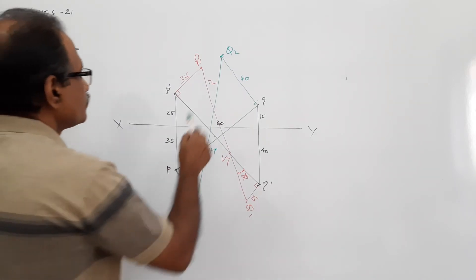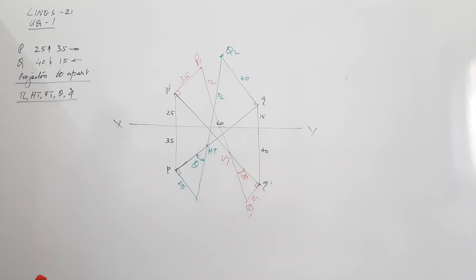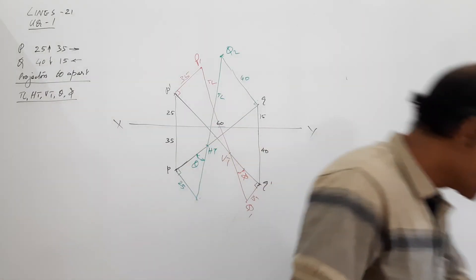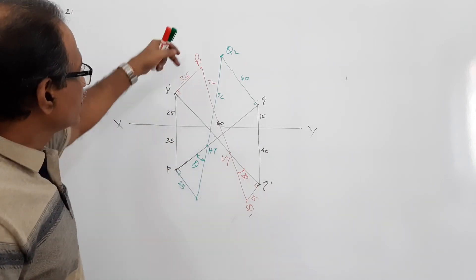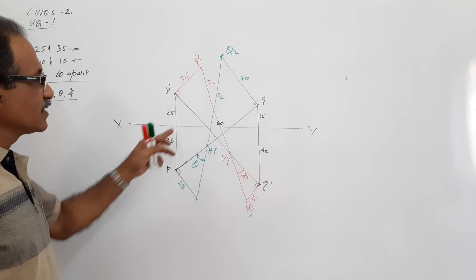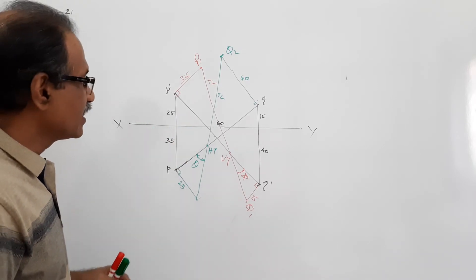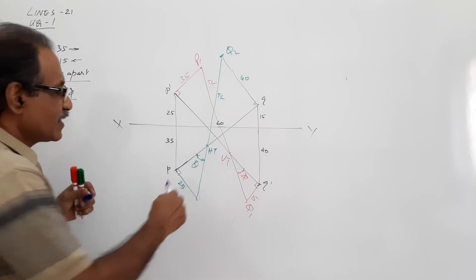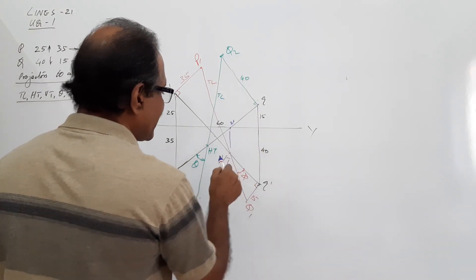If these angles are same, there is high probability that your answer is correct. Check it. The plan cut the XY at V, this is V, drop a vertical through that - VT.